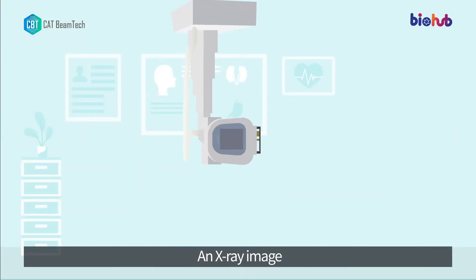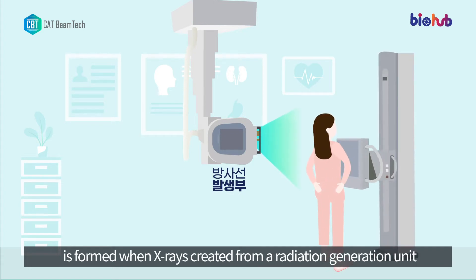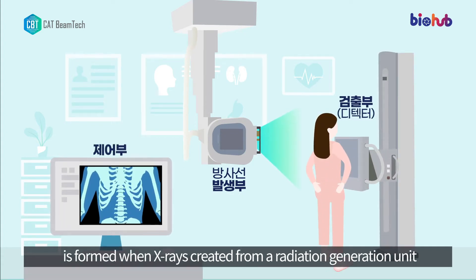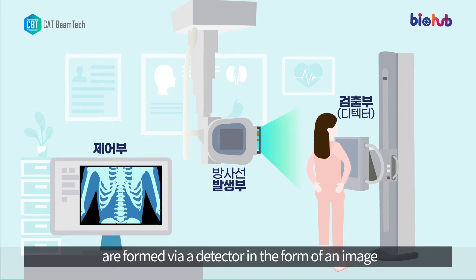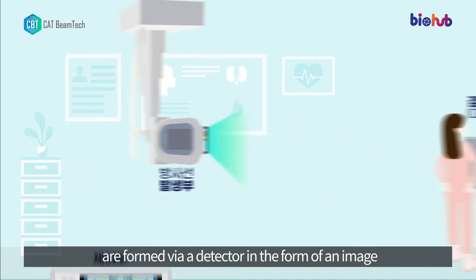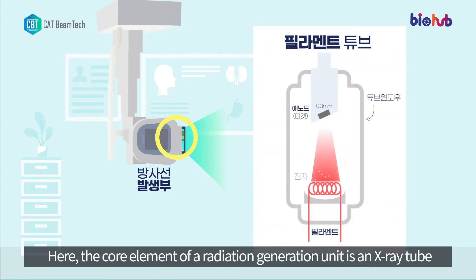An X-ray image is formed when X-rays created from a radiation generation unit penetrate a target object, and its shadows are formed via a detector in the form of an image.